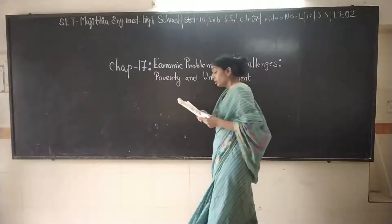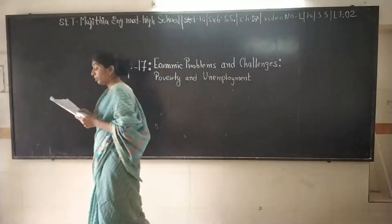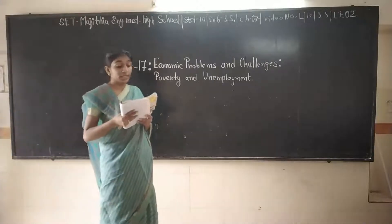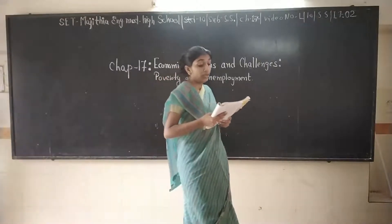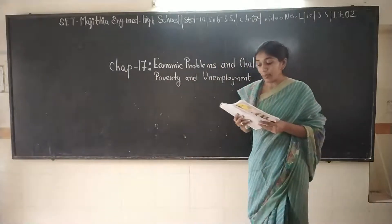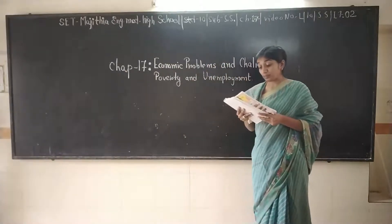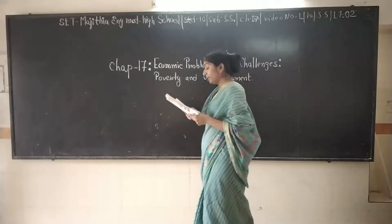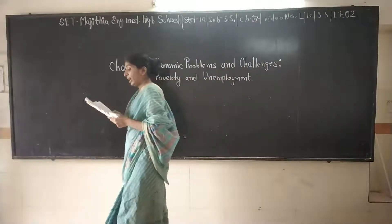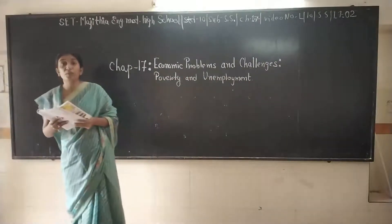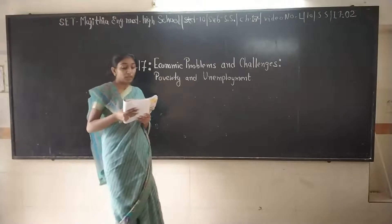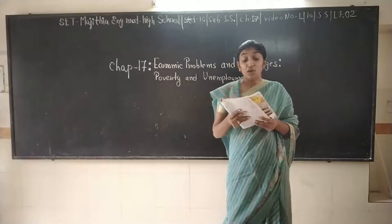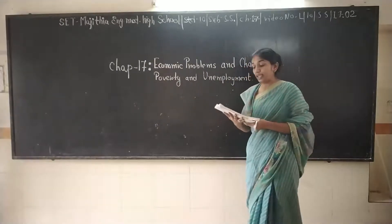According to a World Bank report, India's total population was approximately 121 crore in 2010, out of which 32.7% — that means approximately 68.3% — people are living below the poverty line, which makes around 45.6 crore people who were below the poverty line at that time.